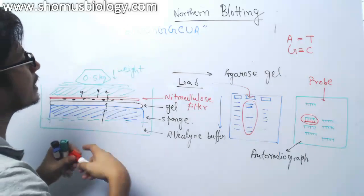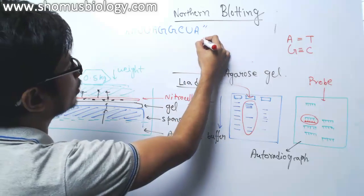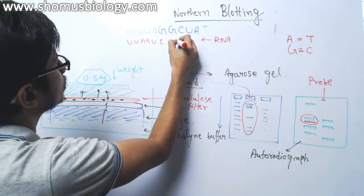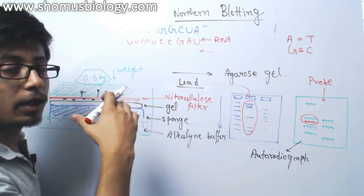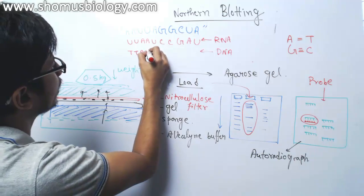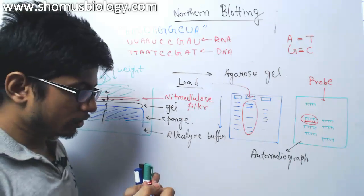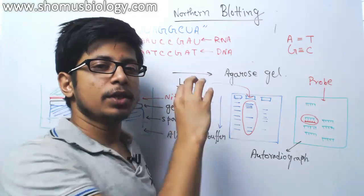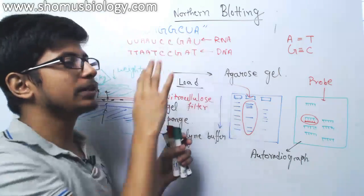The complementary strand of this RNA — if expressed as RNA — would be U, U, A, A, U, C, C, G, A, U. If we think of this complementary strand as a DNA fragment, it would be T, T, A, A, T, C, C, G, A, T. These are the complementary DNA strands that we have to generate. Once we generate these strands, we can use them as a probe, and that probe can bind to the target RNA.